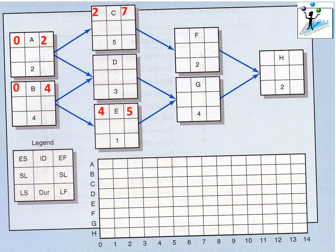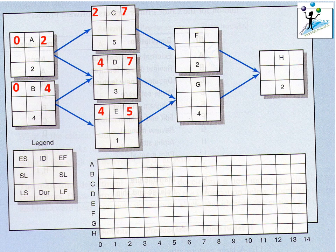Activity D is a merge activity — both Activity A and Activity B must finish before Activity D can begin. The rule of thumb for a forward pass is to always choose the largest value. Activity D begins after week four since Activity B doesn't finish until then. With a duration of three weeks, the early finish for Activity D is seven weeks.